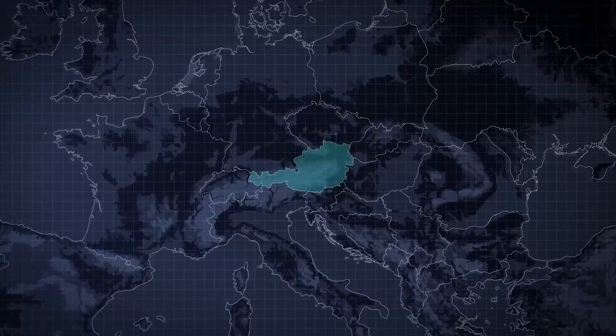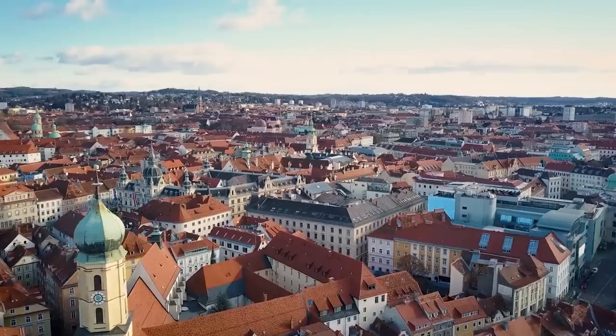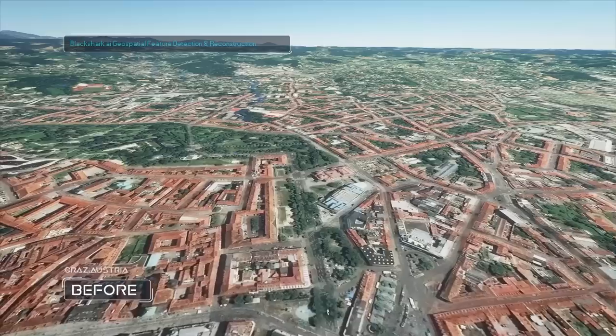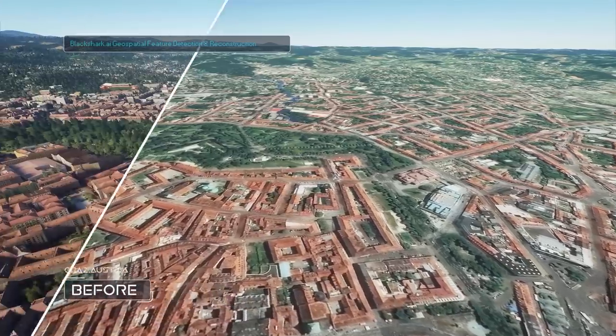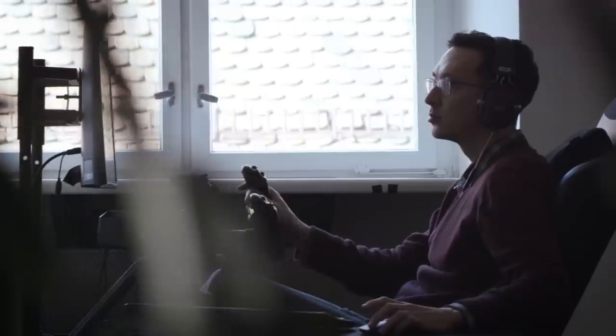BlackShark.ai is headquartered in Graz, Austria, which is actually the very town the superior camera technology used initially by Bing Maps has its origins at. This kickstarted a flourishing geospatial ecosystem and has been breeding ground for spin-offs such as Vexcel Imaging, Amazon, and other global market and technology leaders.